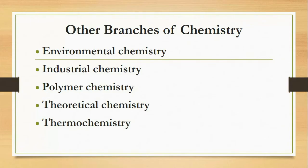Other branches of chemistry include: Environmental chemistry, which studies matter and the environment — for example, pollution. Industrial chemistry, which studies chemical processes in industry — for example, paints. Polymer chemistry, which studies chemical interactions such as those in textiles. Theoretical chemistry, which studies chemical interactions across many areas of emphasis.